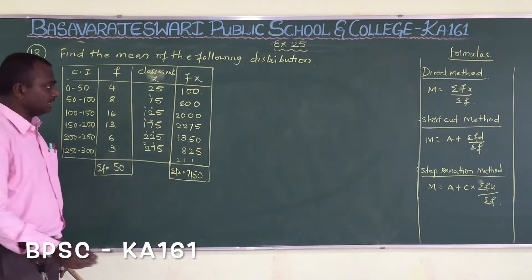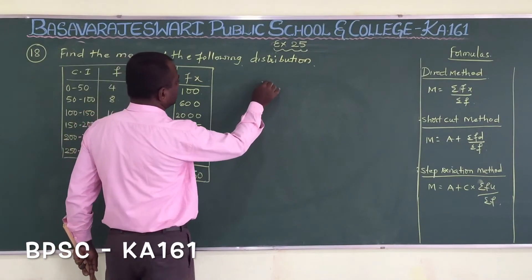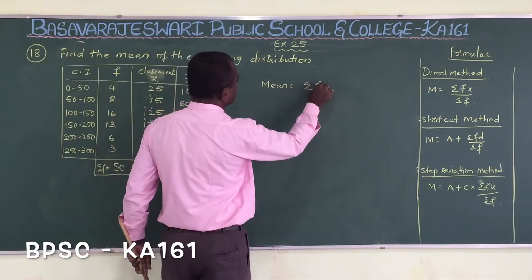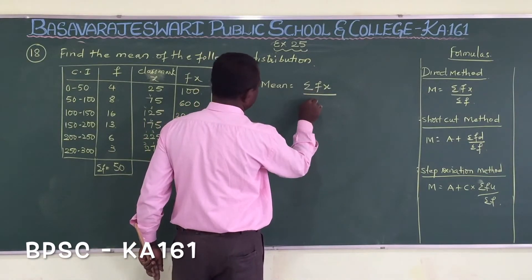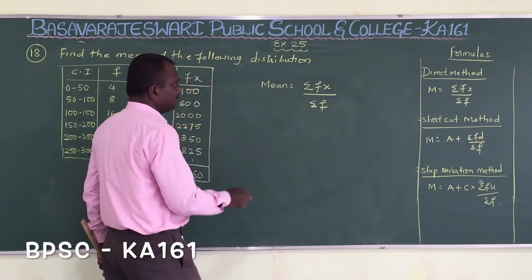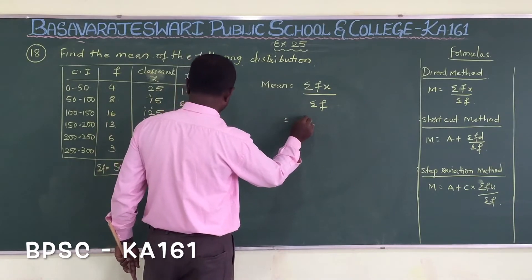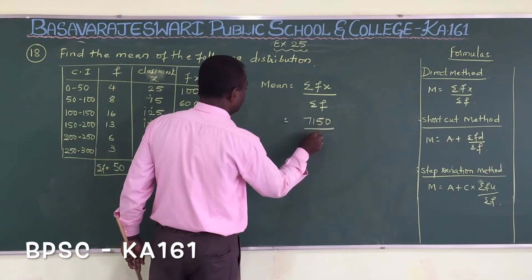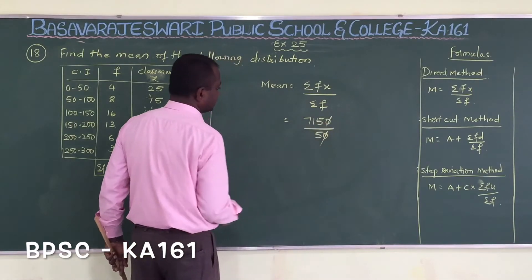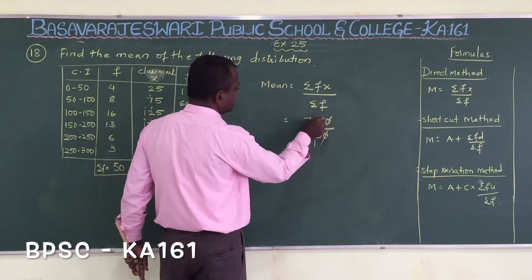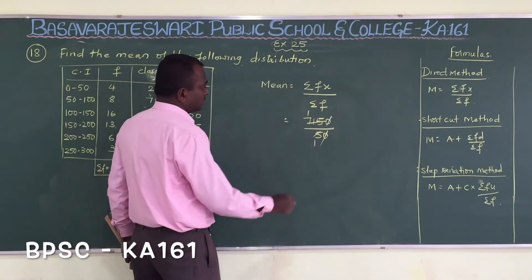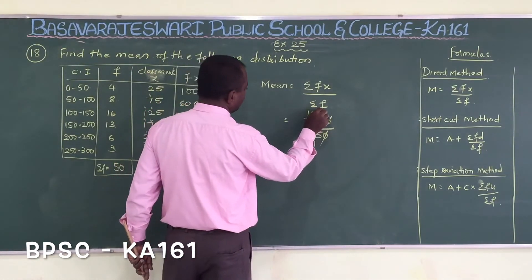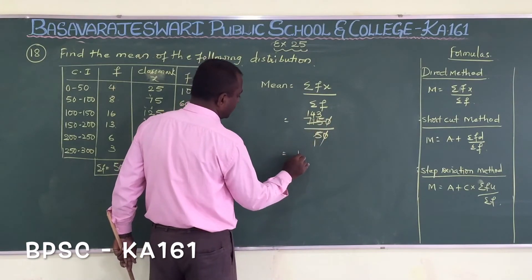Now find out the mean using the direct method. Mean = sigma fx divided by sigma f. So sigma fx = 7150 divided by 50. The zeros cancel, giving 715 divided by 5. 5 goes into 7 once remainder 2, into 21 four times remainder 1, into 15 three times. So the mean is 143.